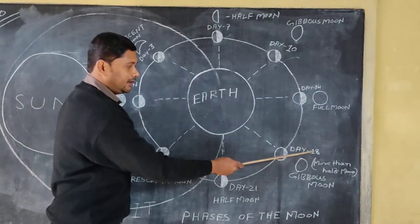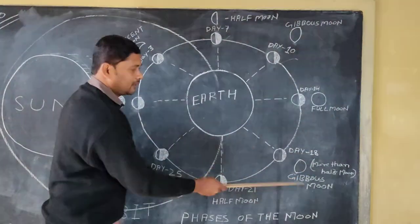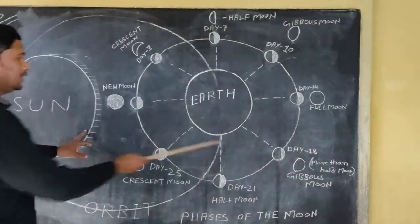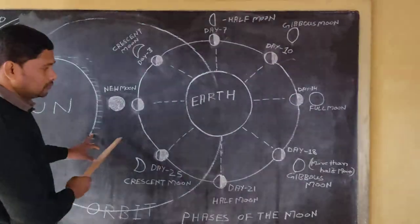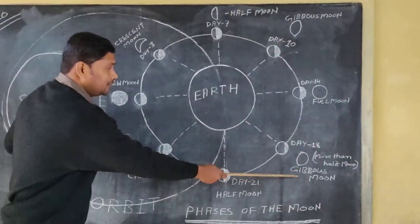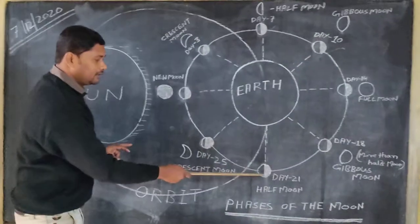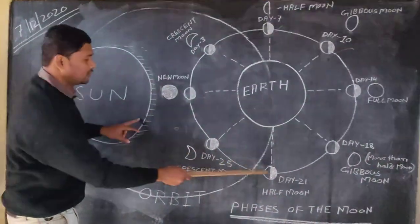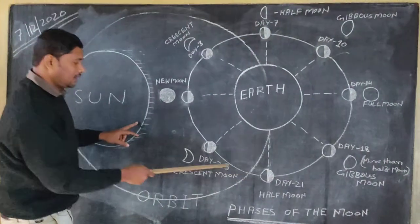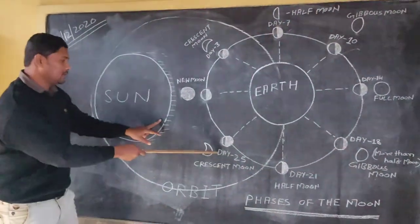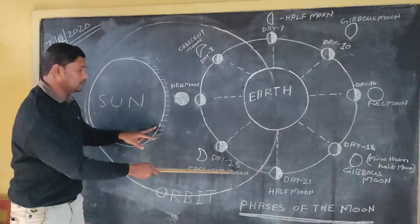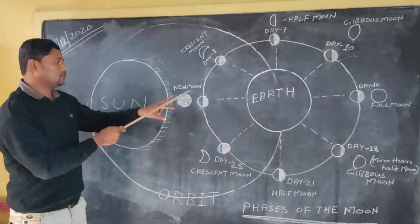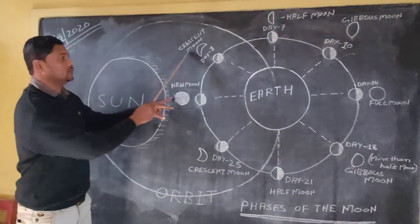Next, coming to day eighteen, we again have the gibbous moon. This time, more of the moon is getting sunlight and we could see more than half the moon — so this is the gibbous moon again. On day twenty-one we have the half moon again, as the moon is getting sunlight from this side. Then on day twenty-five we have the crescent moon again, and then once more we arrive at the new moon, and the cycle starts again from here.